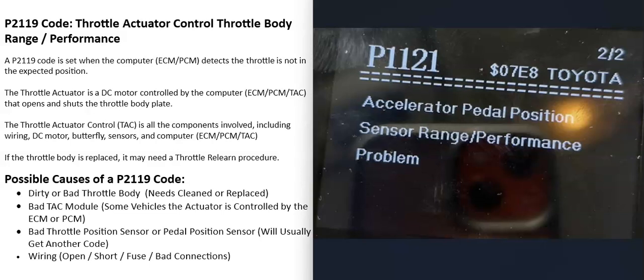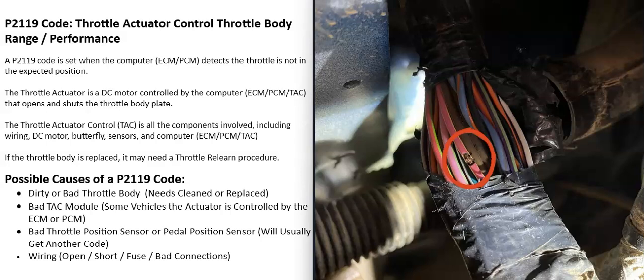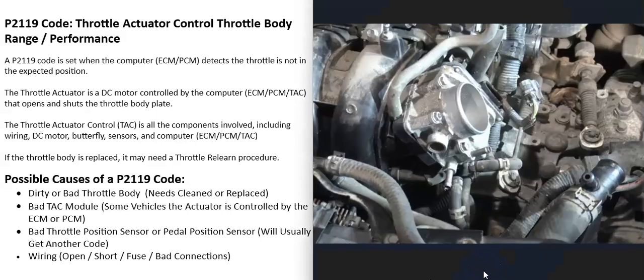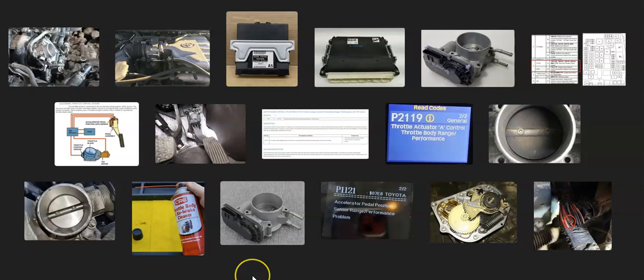Another possible cause is a wiring problem — something like an open circuit, a short, a blown fuse, or a bad connection. Check for any blown fuses labeled ETCS, ECM, throttle control, or anything along those lines. Which fuse controls the throttle actuator control system will vary by year, make, and model, but checking for blown fuses is a good starting point for diagnosing wiring issues.